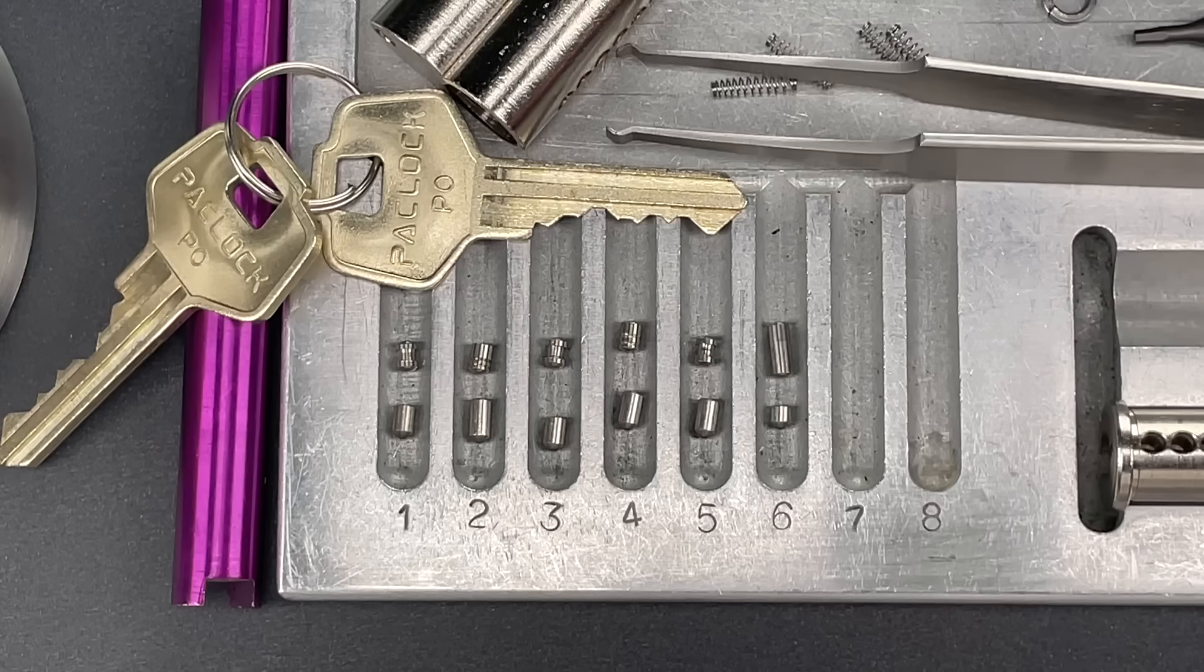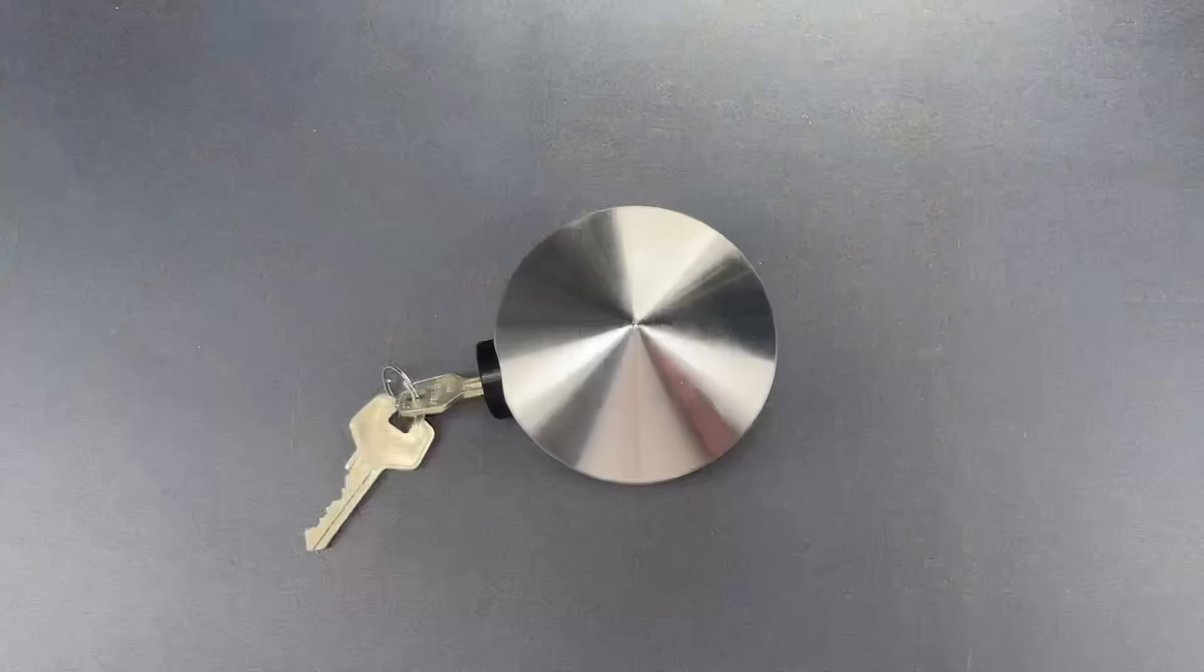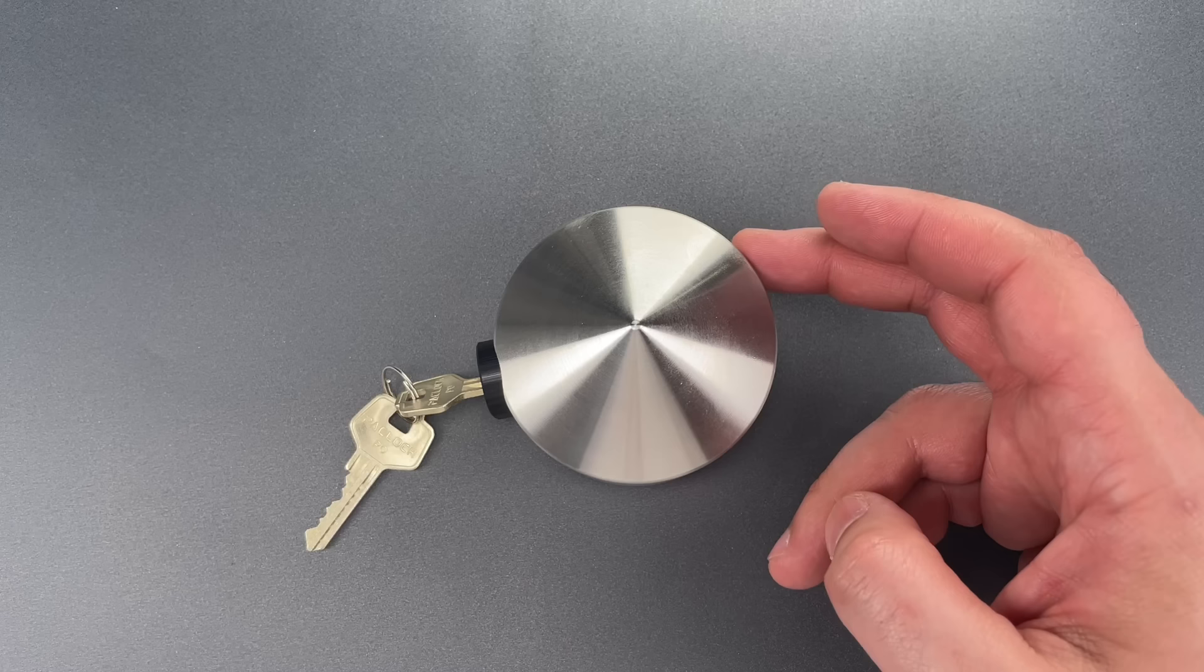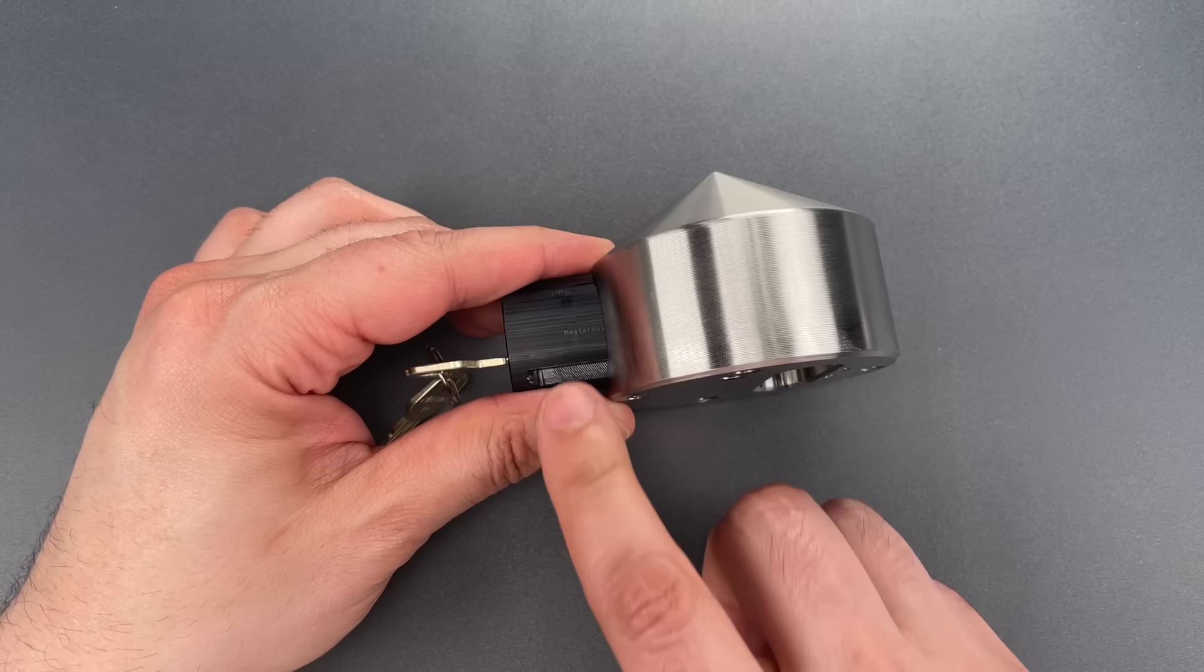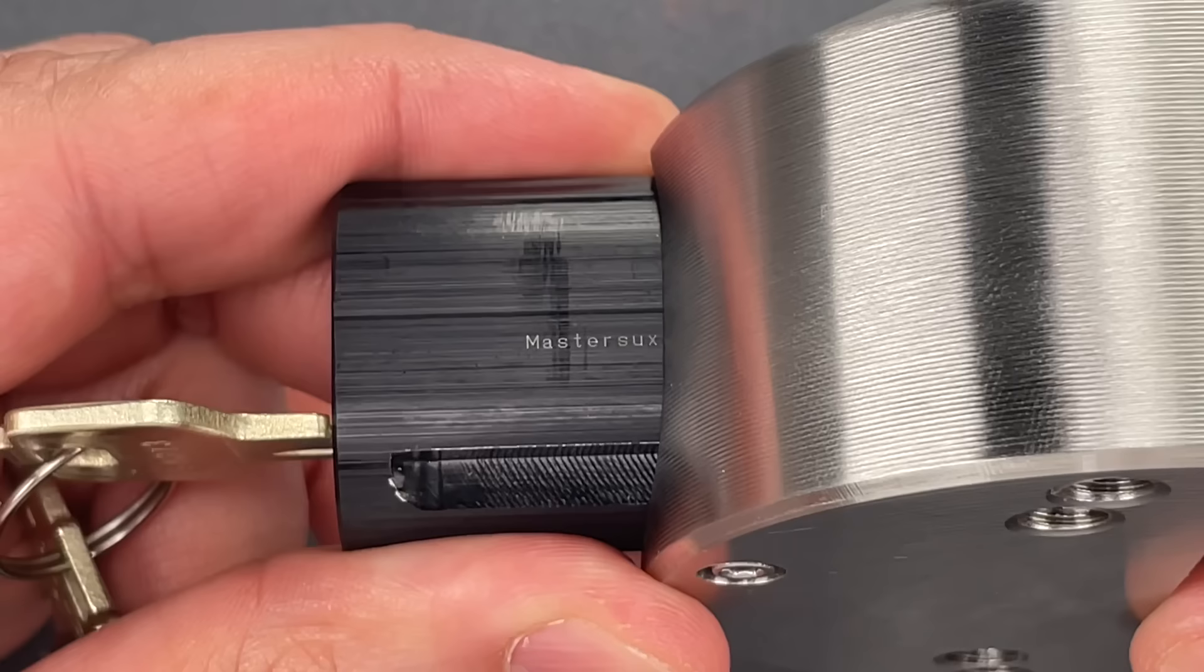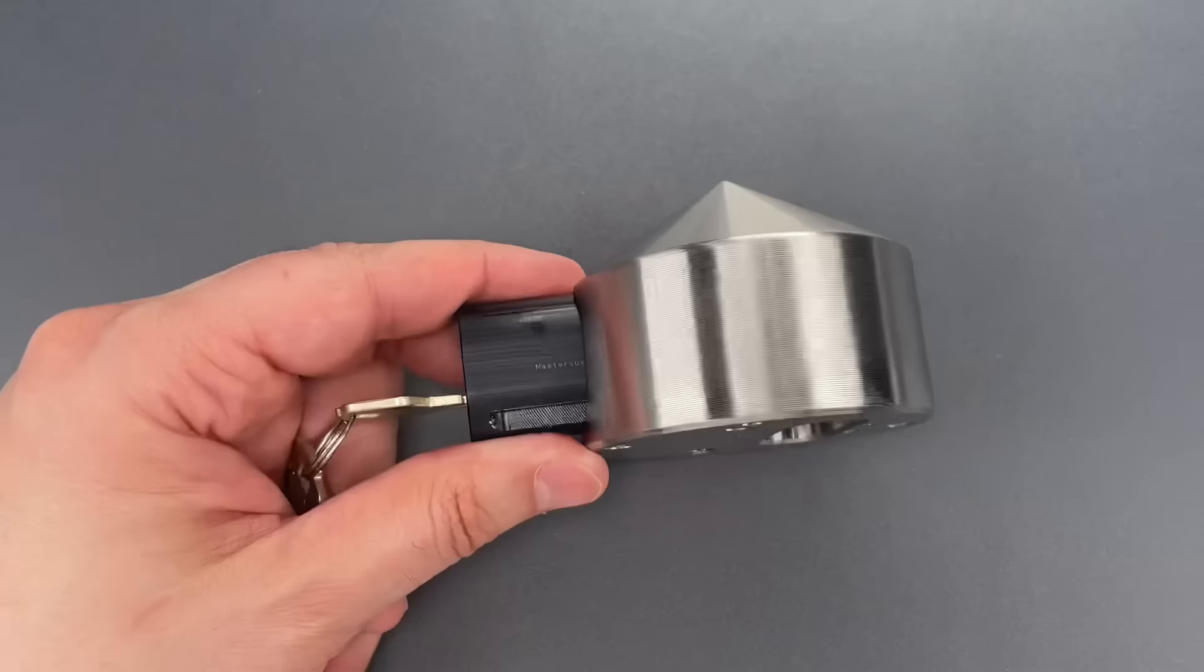Folks that's all I have for you. I need to apologize because I promised to show you the easter egg that PackLock left for us and I neglected to do so. But better late than never. If we open the lock and take a close look at the side of the core carrier, we can see laser engraved the words 'master sucks.' It would seem that the folks at PackLock love to troll Master Lock.